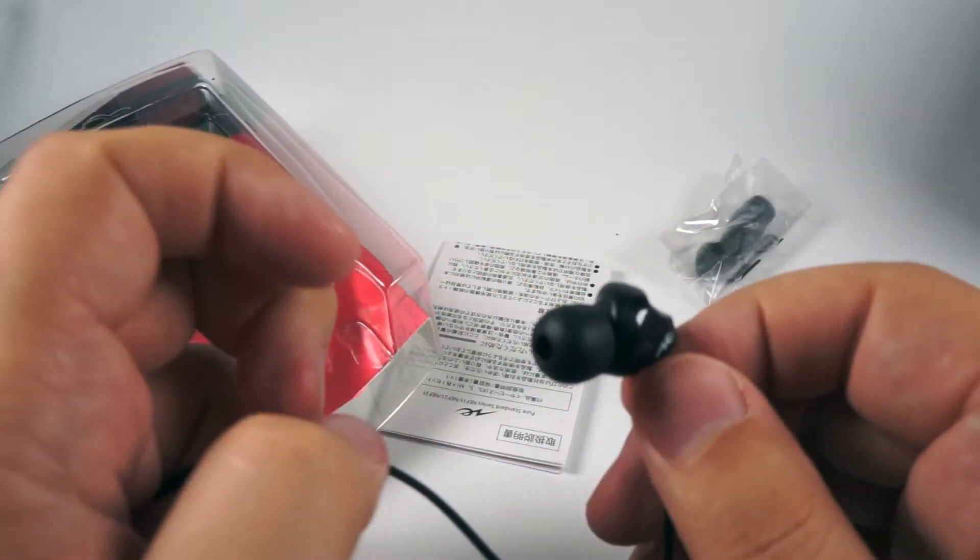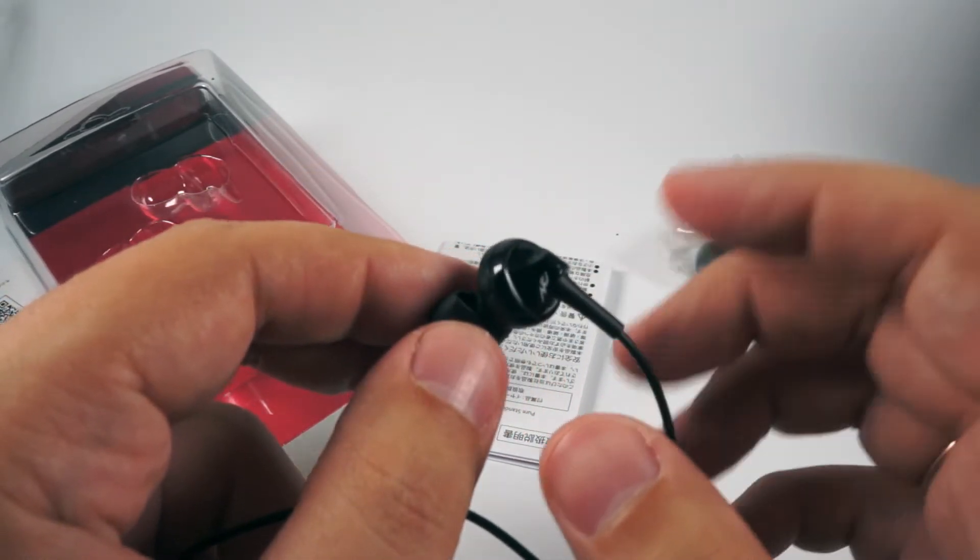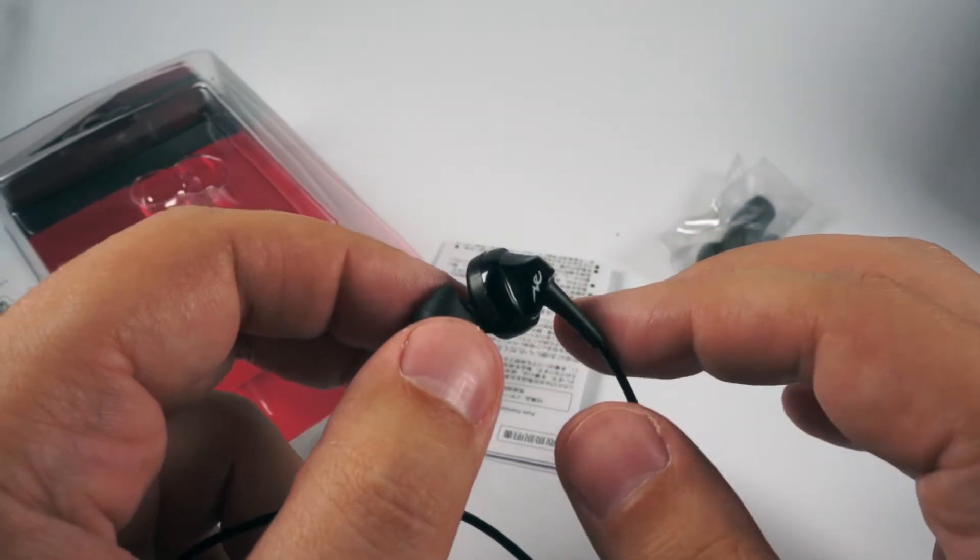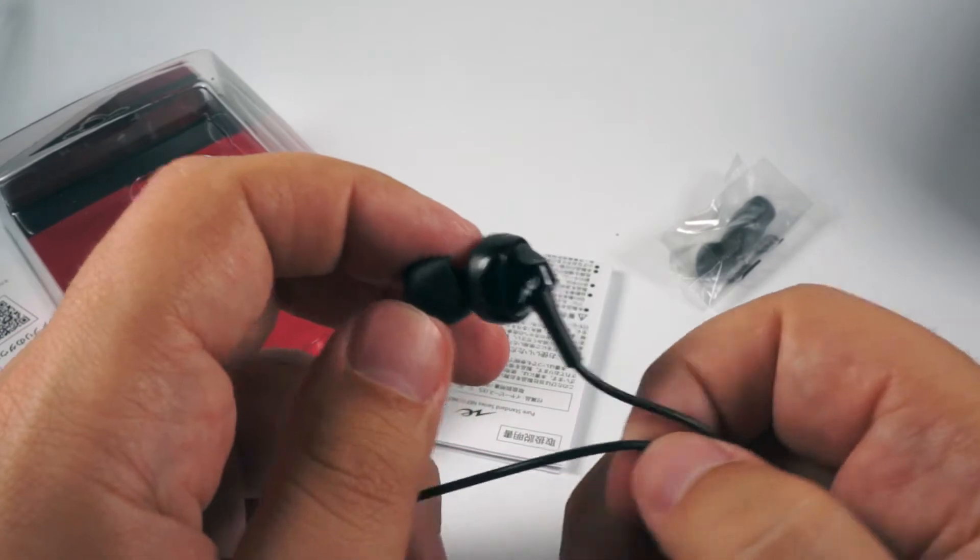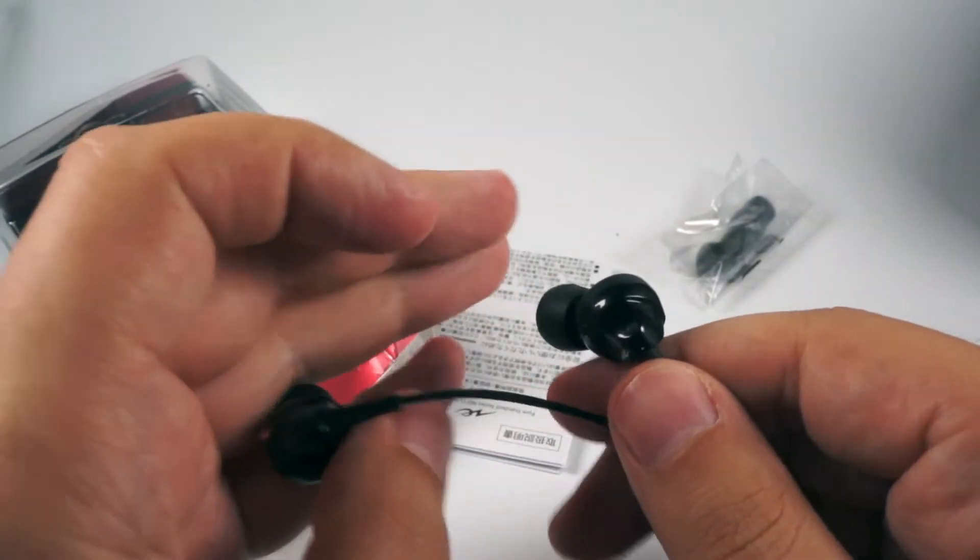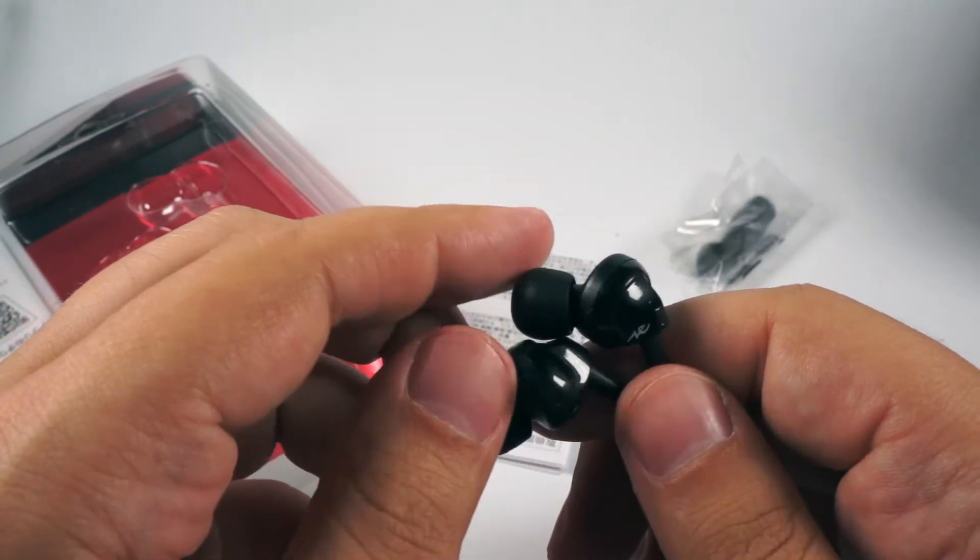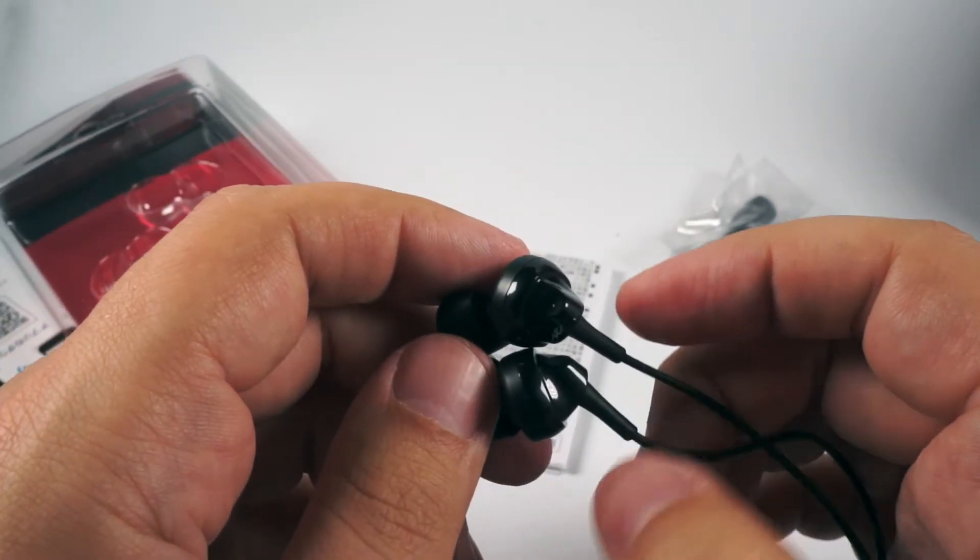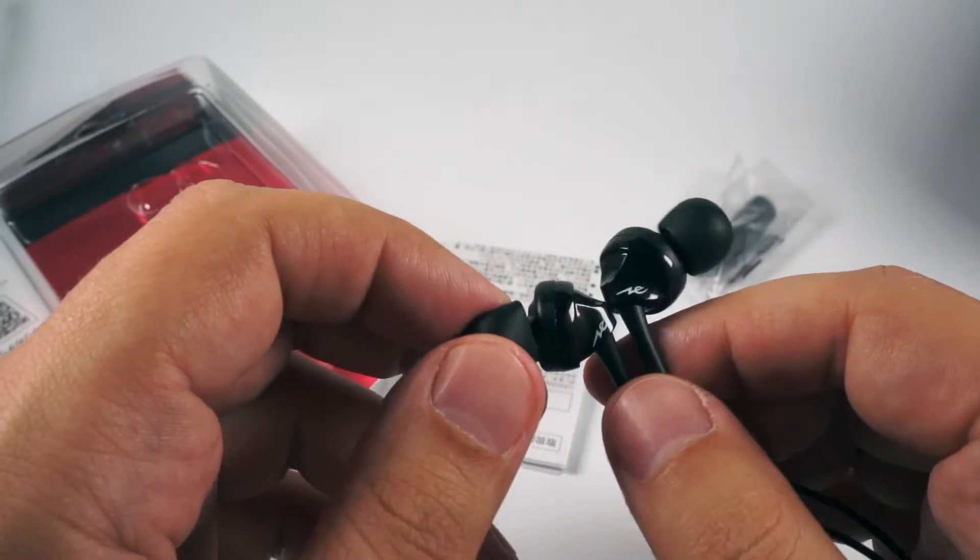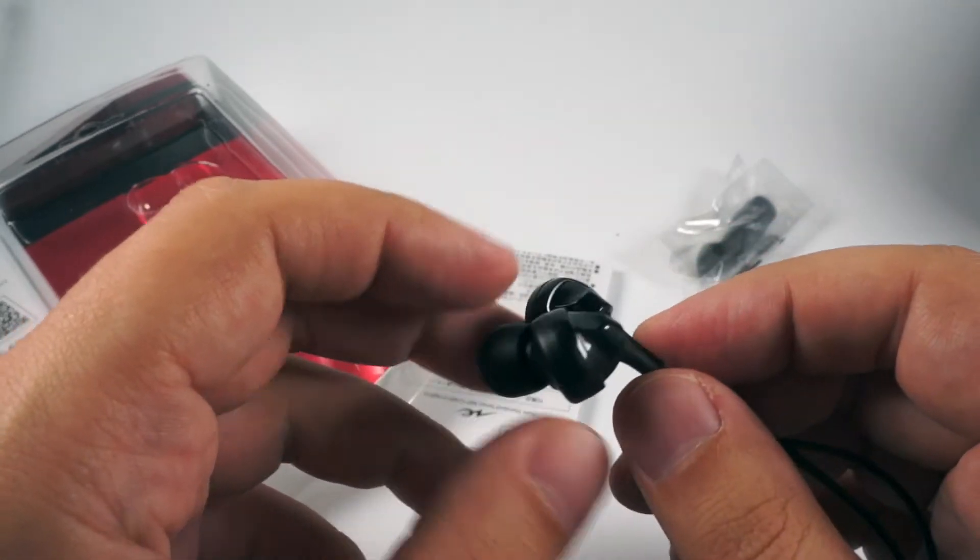They're offering nice V-shaped signature with bigger accent on lows and not so big accent on treble. But without exceeding the limits of normal sounding. I think this model is more interesting than the 21st model. Because this will definitely fit the tastes of those who like low frequencies and are limited on money.